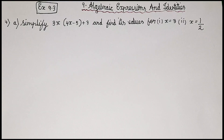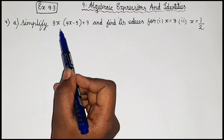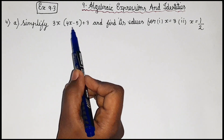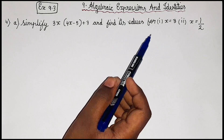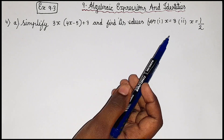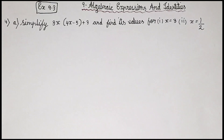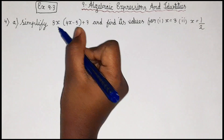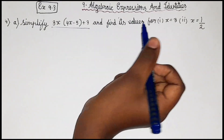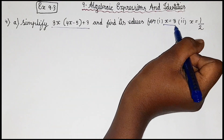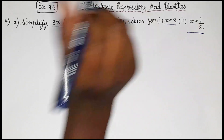So guys, let's read the question. Simplify 3x into 4x minus 5 plus 3, and find its values for x is equal to 3 and x is equal to 1 by 2. So guys, in the first question they have mentioned that we should simplify this expression and find the value for x equal to 3 and x equal to 1 by 2.